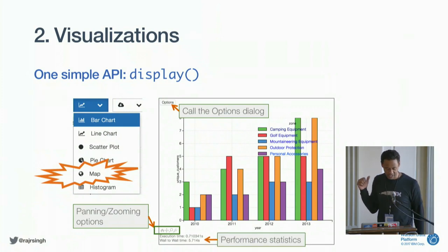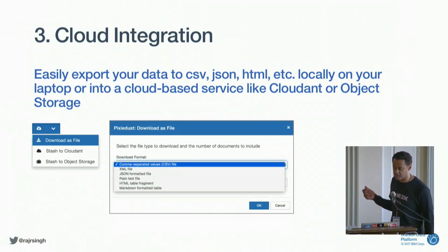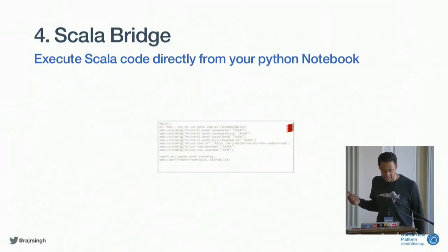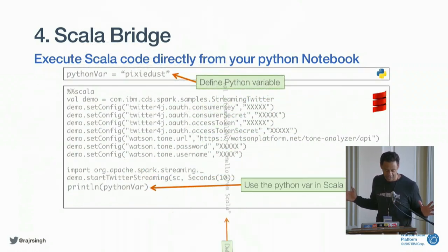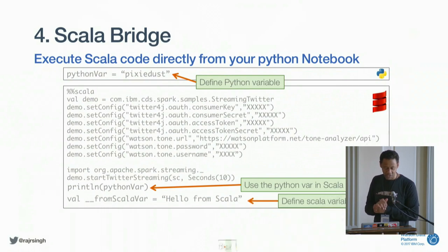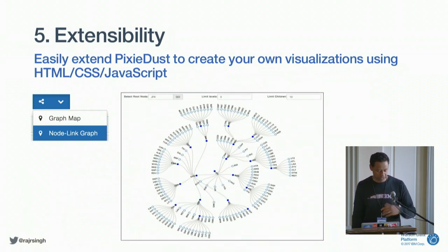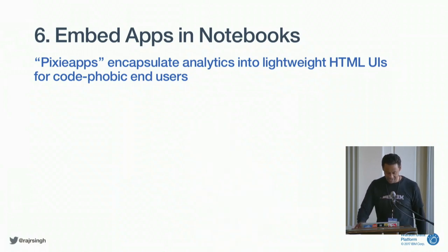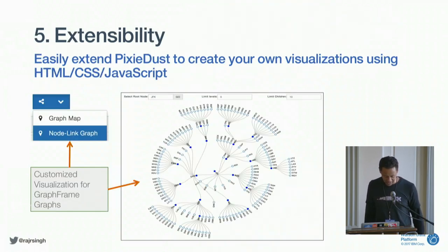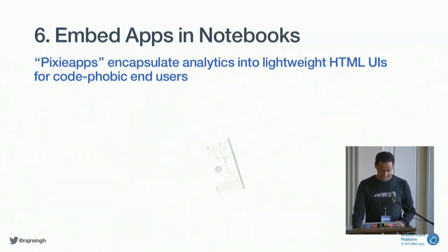Data export into files — CSV, JSON, XML — or your favorite online cloud IBM database. The Scala bridge: if you want to use a really good Scala library but you're working in Python, you can share variables between Python and Scala and go back and forth. That's an amazing feature. Extensibility with HTML, CSS, and JavaScript, and embedded apps.